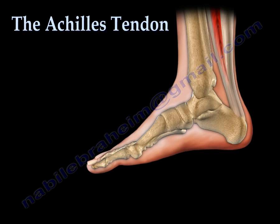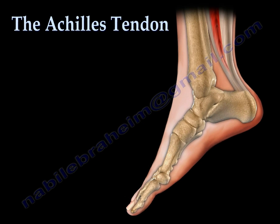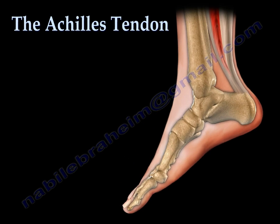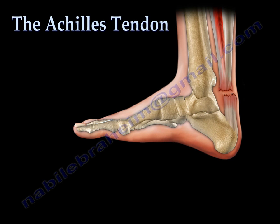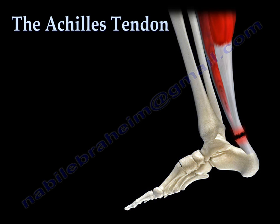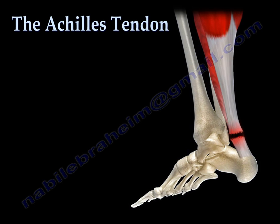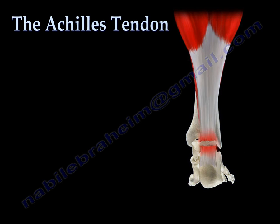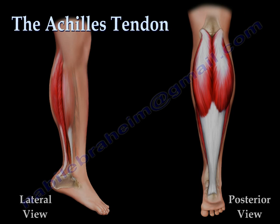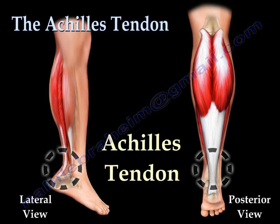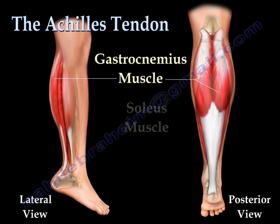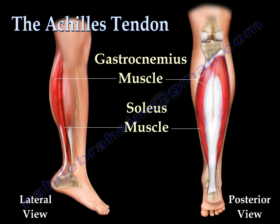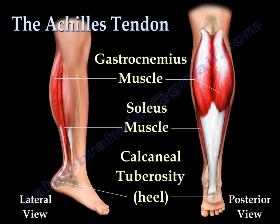The Achilles tendon is the thickest and strongest tendon within the body, although occasionally it is exposed to stresses which make it susceptible to injury. Injuries to the Achilles tendon commonly occur when forces placed on the tendon exceed its tensile limits. The Achilles tendon is a strong, fibrous cord that connects the gastrocnemius and soleus muscles to the calcaneal tuberosity.